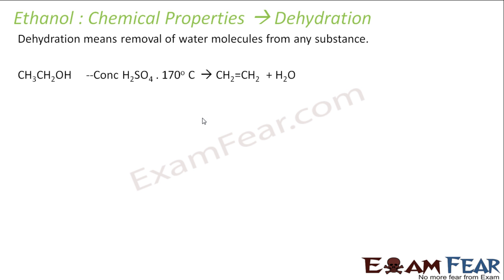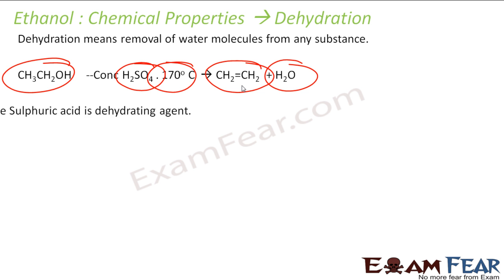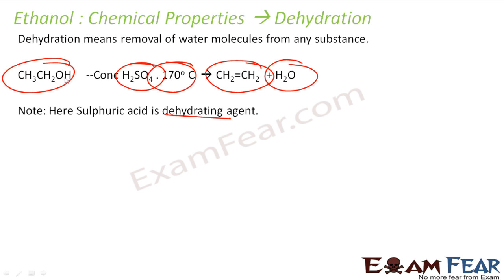Dehydration means removal of water molecule from any substance. When you have ethanol and use sulfuric acid at a temperature of 170 degrees Celsius, ethanol gets converted into ethene and a water molecule is kicked out. So dehydration can happen — you can remove the water molecule from ethanol to get ethene. Here, sulfuric acid is acting as a dehydrating agent, which is an agent that removes water from any compound.